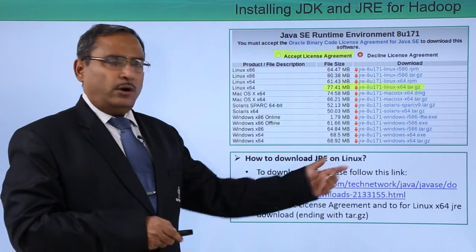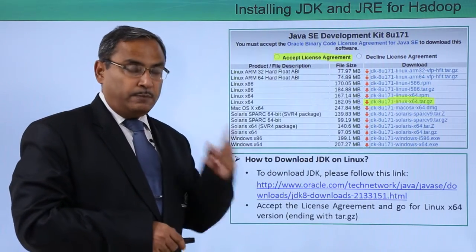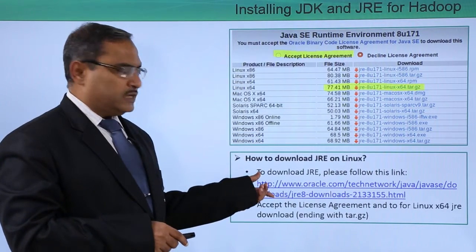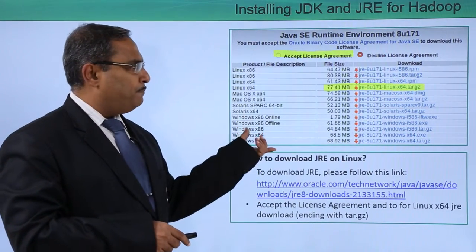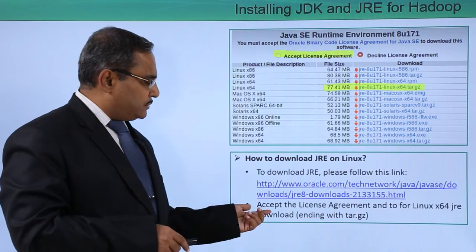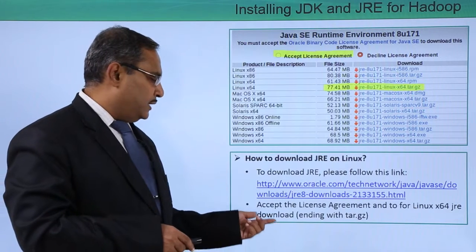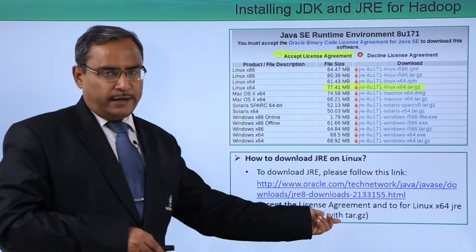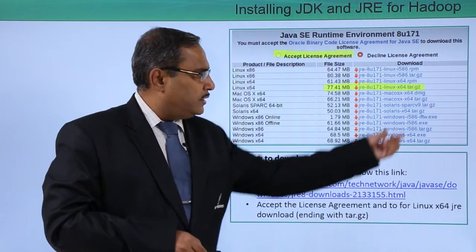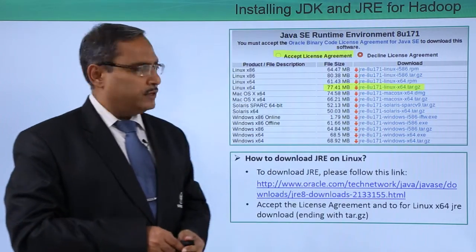How to download JRE on Linux? In the previous step we downloaded only the JDK, but we are now supposed to download the JRE as well. Go to the respective link, this page will come up, accept the license agreement, then go to the Linux x64 JRE download ending with the extension tar.gz.